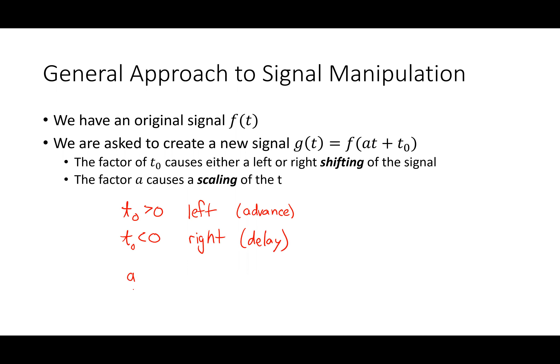Then we talked about the scaling factor A. If A is less than one, the signal expands on the X axis — it gets wider. It doesn't get any bigger vertically, just expands on the X axis. And if A is greater than one, it compacts.